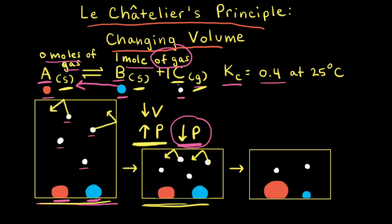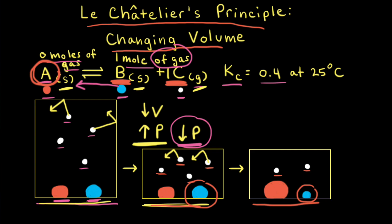If the net reaction moves to the left, we're going to lose some of our products — we're going to decrease the amount of C and the amount of B — and we're going to gain some of our reactants, increasing the amount of A. We can see all that in the third particulate diagram. Going from the second to the third diagram, we've gone from four particles of C to only two particles of C. The blue solid B has gotten smaller, and the red solid A has gotten bigger. By going from four particles of C to only two, we've decreased the amount of gas and therefore decreased the pressure.